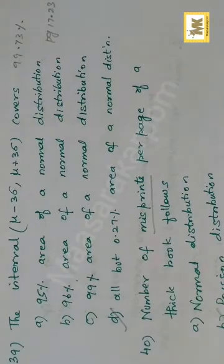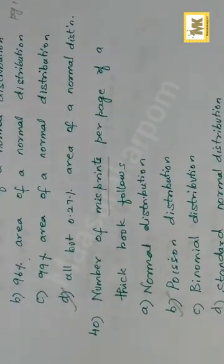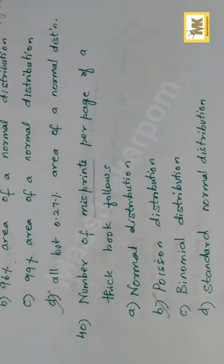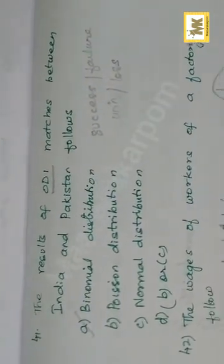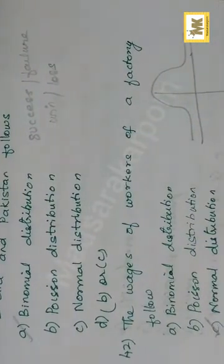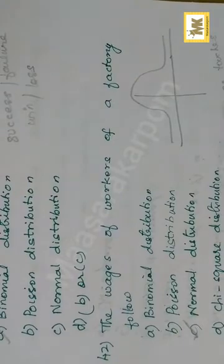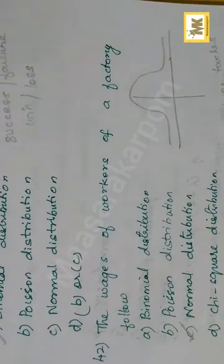Number of misprints per page follows Poisson distribution. Poisson applies to accidents and misprints. The result of ODI, one day international matches, follows normal distribution. Wages of the workers of a factory follow normal distribution. Wages cannot be zero or negative, so it is normal distribution.